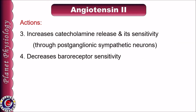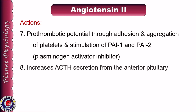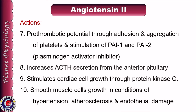Other actions of angiotensin 2 include release of catecholamines, especially norepinephrine, through post-ganglionic sympathetic neurons and increased sensitivity. It decreases baroreceptor sensitivity, and both these actions help raise blood pressure. Angiotensin 2 also increases fat mass through upregulation of lipogenesis and downregulation of lipolysis. It causes contraction of mesangial cells and helps in GFR regulation. It has prothrombotic potential, causing platelet adhesion and aggregation and stimulation of plasminogen activator inhibitor 1 and 2. It increases ACTH secretion from the anterior pituitary. It also has significant growth effects on cardiac muscles, mediated through protein kinase C, with similar action in smooth muscle cells in conditions of hypertension, atherosclerosis, and endothelial damage.